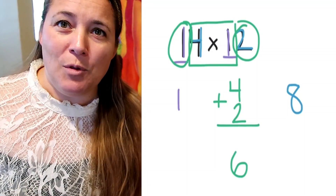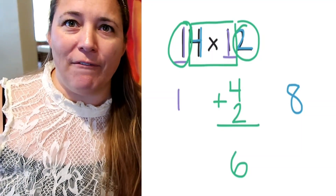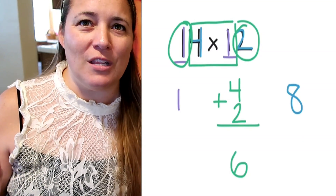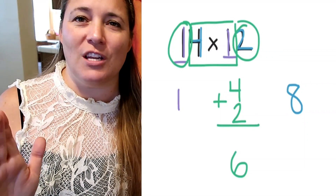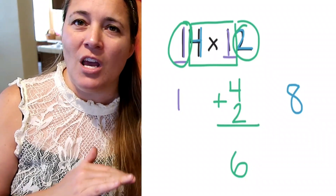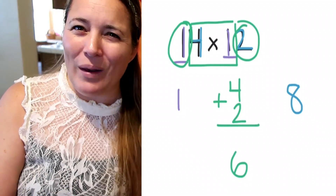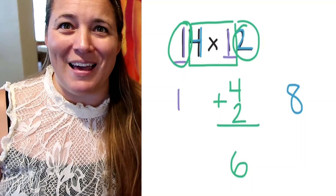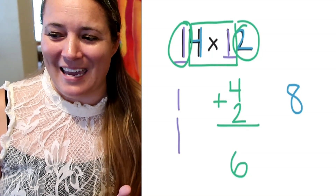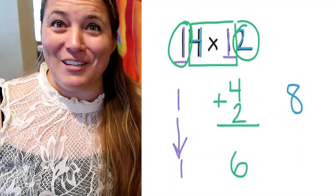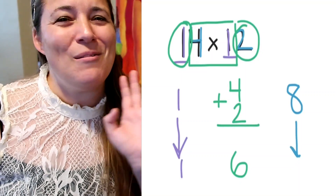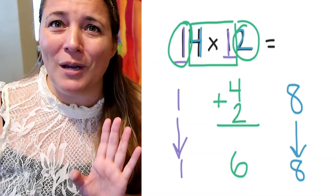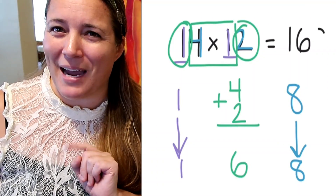Looking at this problem, every number in each position — ones, tens, and hundreds — is a single digit, so I don't have to worry about carrying yet. Our final answer is 168. Now you might be thinking you're not sure about this, but don't worry — we're going to keep practicing.